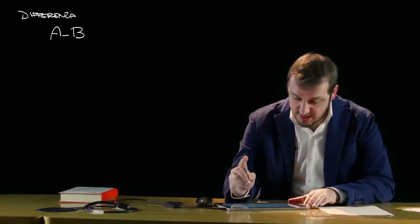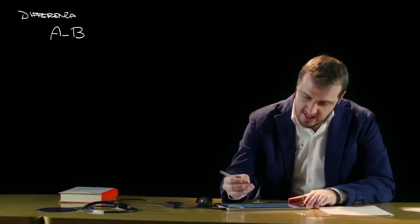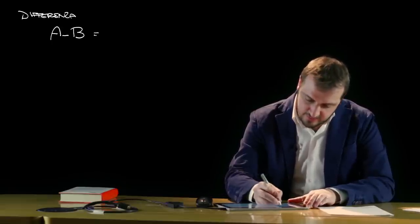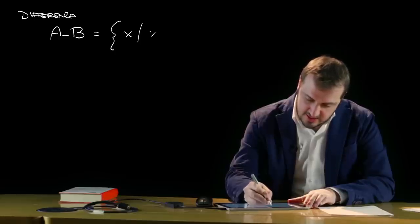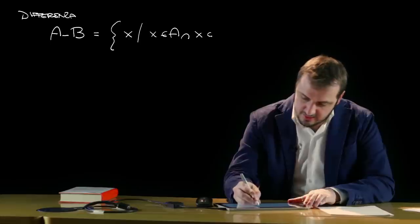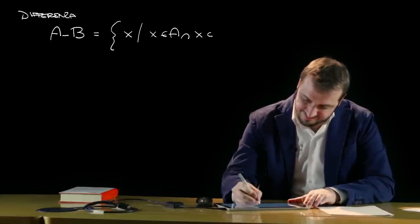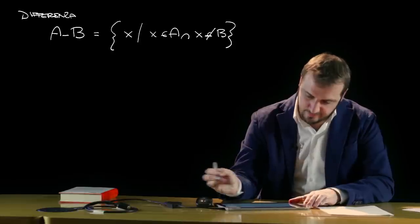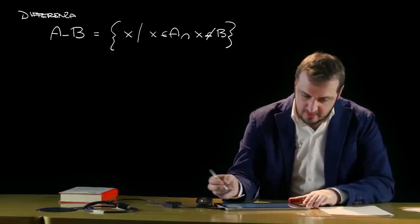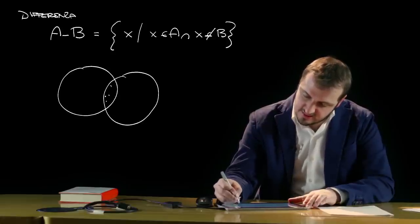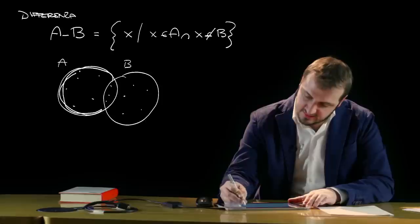C'è poi la differenza tra due insiemi. È importante definire l'ordine: la differenza A-B è diversa da B-A. La differenza A-B è l'insieme degli elementi di A che non appartengono all'insieme B, definita come gli x tali che x appartiene ad A e contemporaneamente non appartiene a B. Nel caso considerato, l'insieme differenza corrisponde alla parte dell'insieme A che non si sovrappone a B.